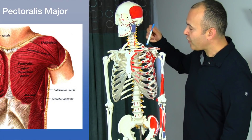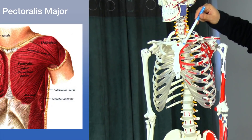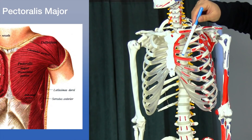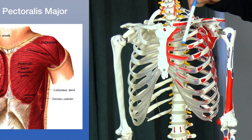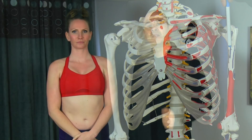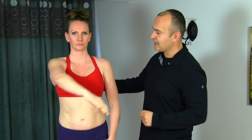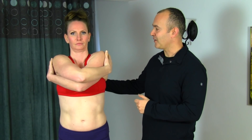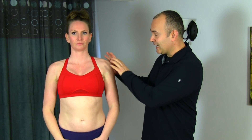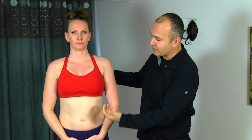The pectoralis major has two heads: the clavicular head from the anterior medial clavicle, and the sternal-costal head from costal cartilages one through six and rib seven. The two heads converge and attach into the humerus — the clavicular head slightly below the sternal-costal head on the lateral aspect of the bicipital groove. When the rib cage is fixed, the muscle adducts and medially rotates the arm. When the shoulder is fixed, it depresses the clavicle, and the inferior fibers assist in inspiration.